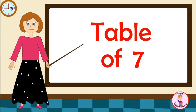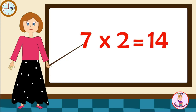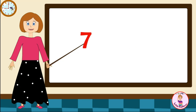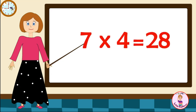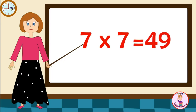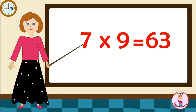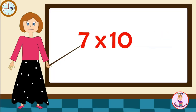Table of Seven. Seven-one's are seven. Seven-two's are fourteen. Seven-three's are twenty-one. Seven-four's are twenty-eight. Seven-five's are thirty-five. Seven-six's are forty-two. Seven-seven's are forty-nine. Seven-eight's are fifty-six. Seven-nine's are sixty-three. Seven-ten's are seventy.